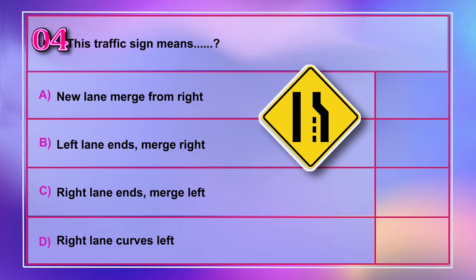Question number 4: This traffic sign means A) new lane merge from right, B) left lane ends merge right, C) right lane ends merge left, D) right lane curves left. Correct answer is C: right lane ends merge left.